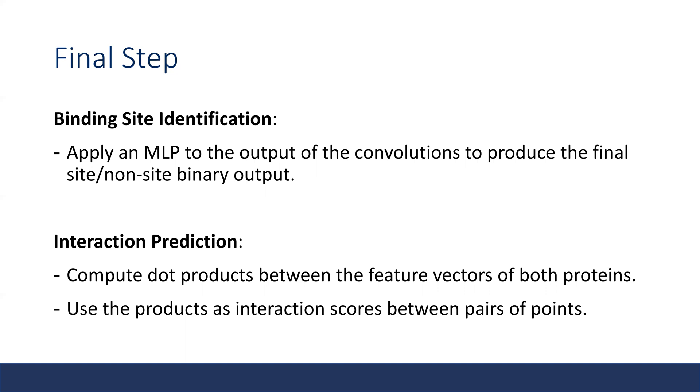For the interaction prediction, it computes the dot product between the feature vector of both proteins and uses it as the interaction scores between the pairs of points.